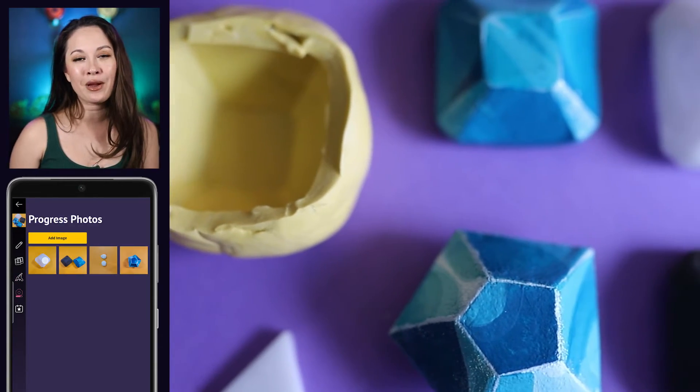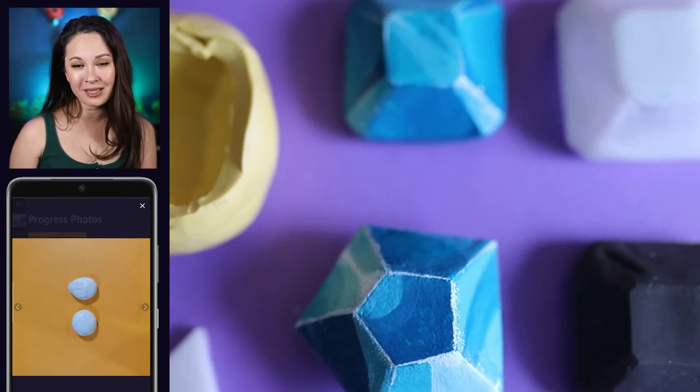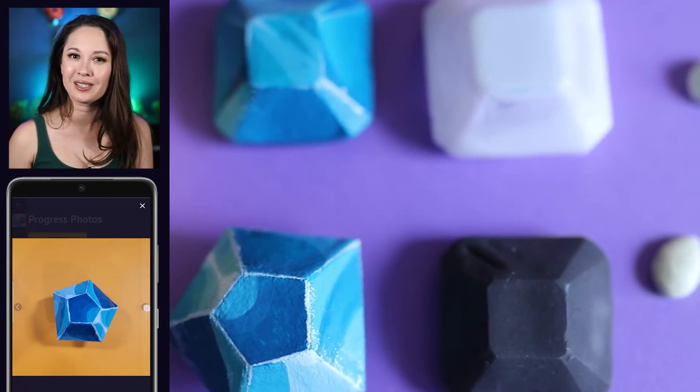Sculpting and carving is a great way to make large lightweight gems especially if they don't need to be translucent or clear.